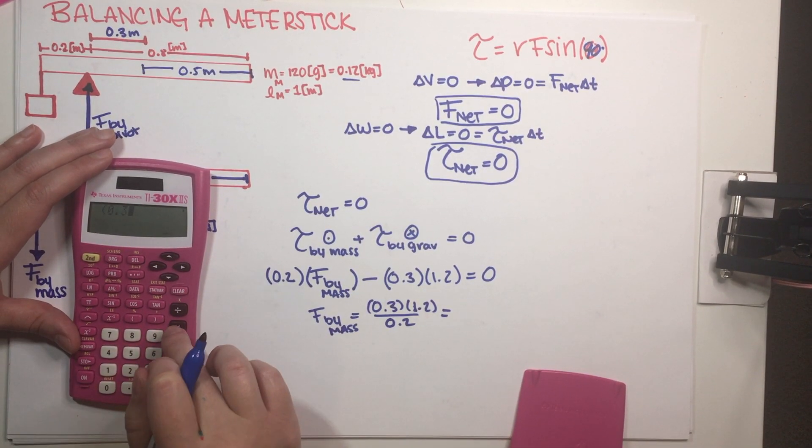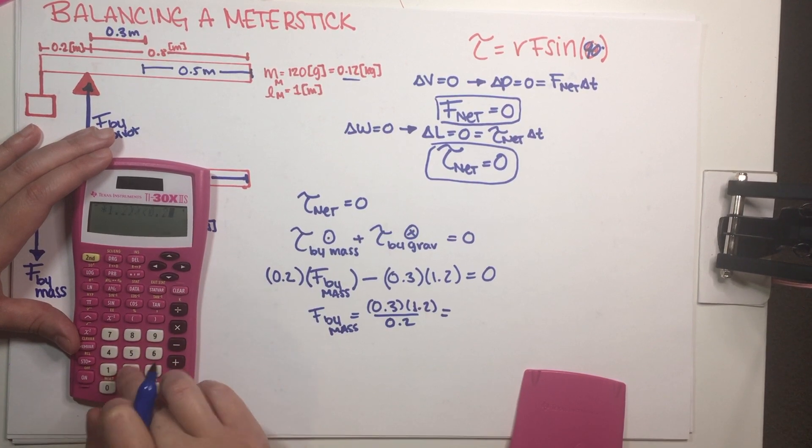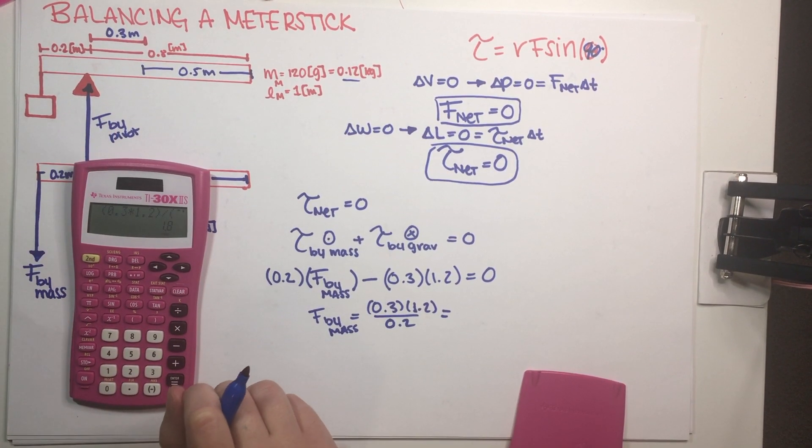0.3 times 1.2 divided by 0.2 would be equal to 1.8.